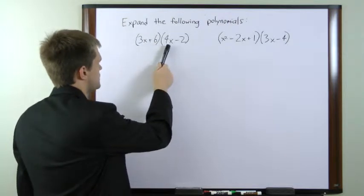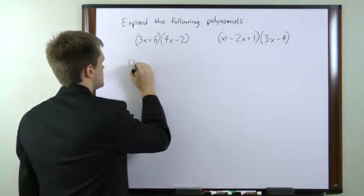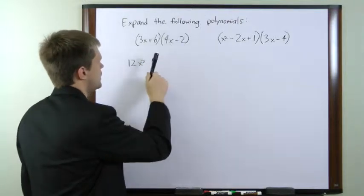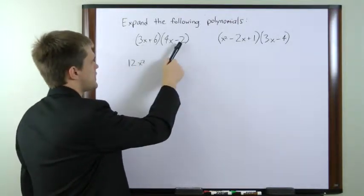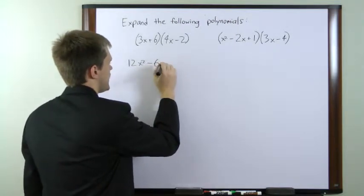The first pair is going to be 3x times 4x, which gives us 12x squared. The outside pair is 3x times negative 2, which gives us minus 6x.